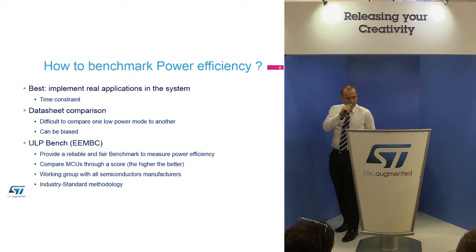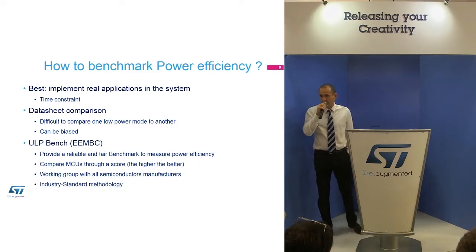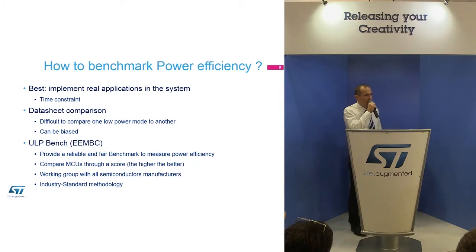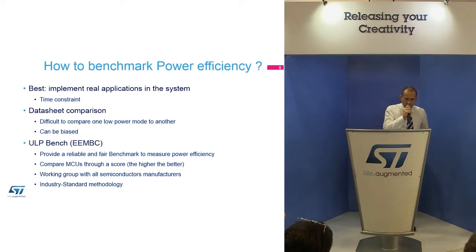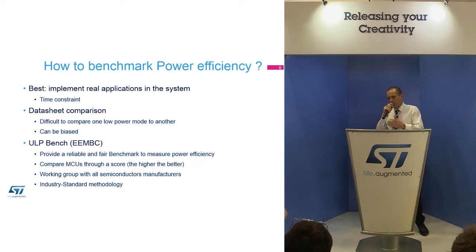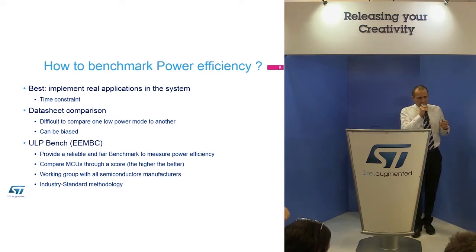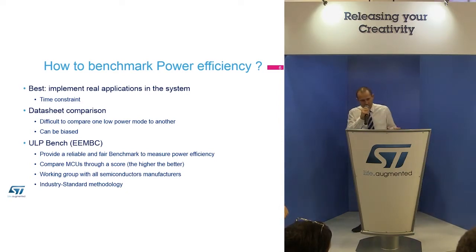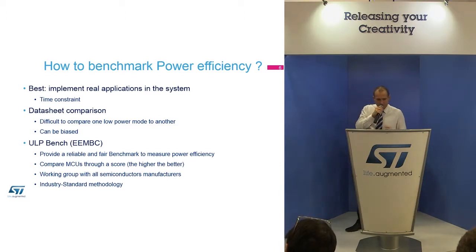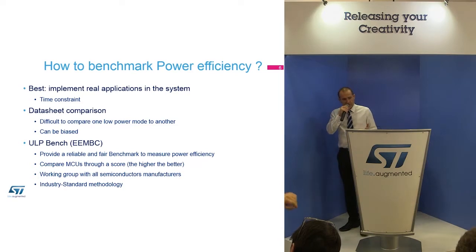Another solution is to use the ULP Bench from EEMBC. This bench provides a reliable and fair way to measure MCU efficiency. It compares MCUs with a score — the higher, the better. The ULP Bench is a working group with all semiconductor manufacturers to define the benchmark, so it is truly an industry standard methodology.